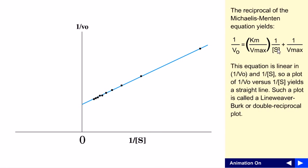If we use this equation in a linear form, then it is linear in 1 by V0, which will be in the y-axis, and 1 by S, which will be in the x-axis. We can yield a straight line by putting only the values. There will be no log of this.